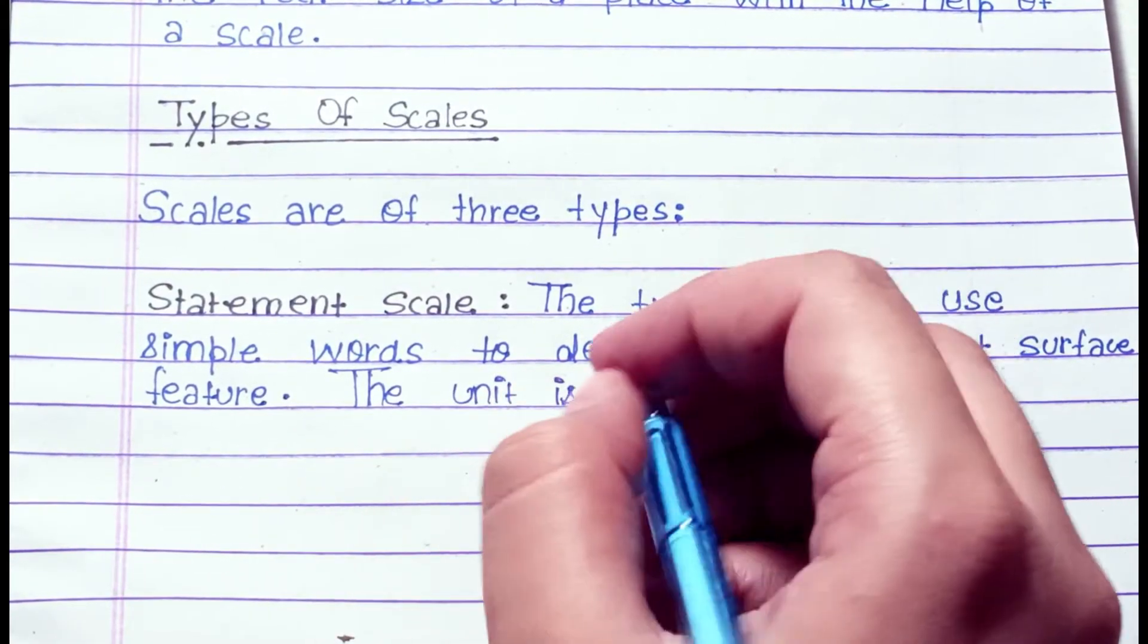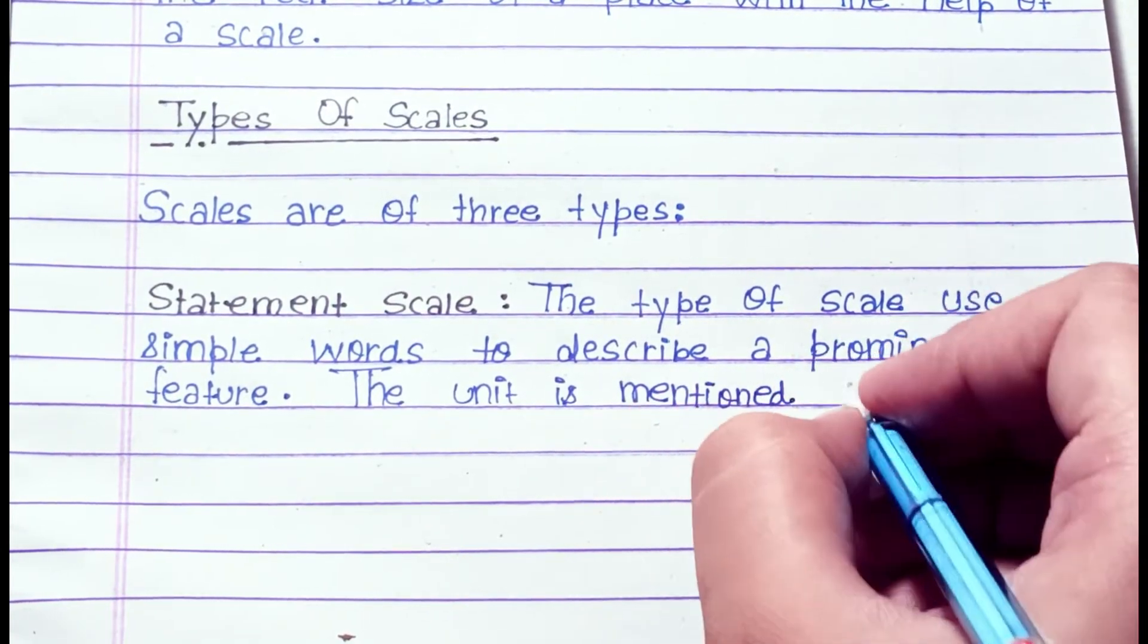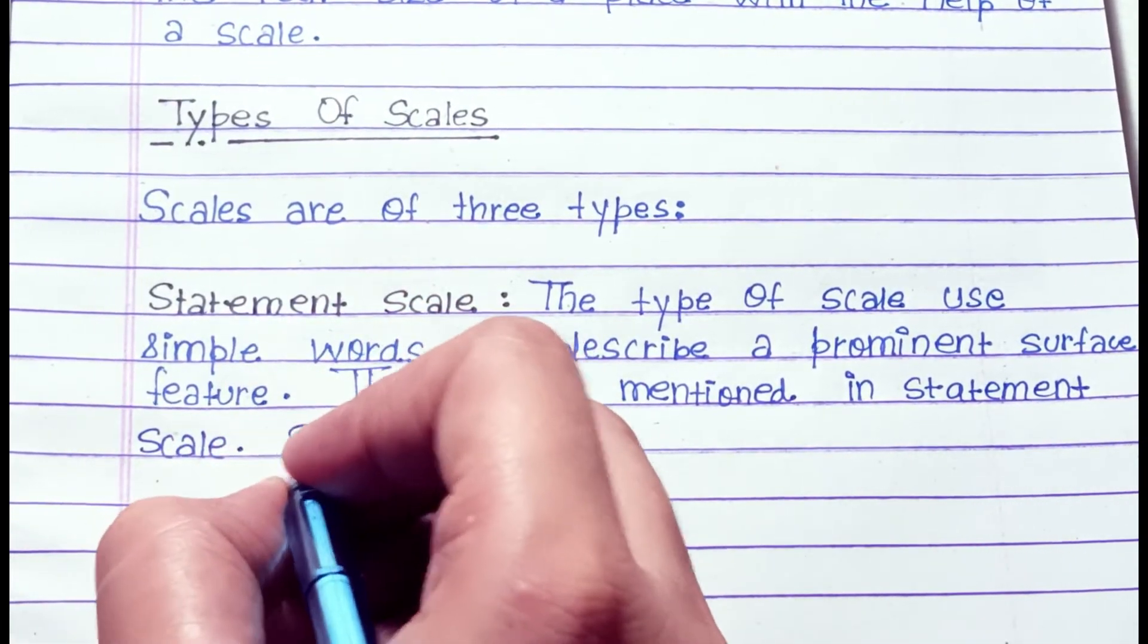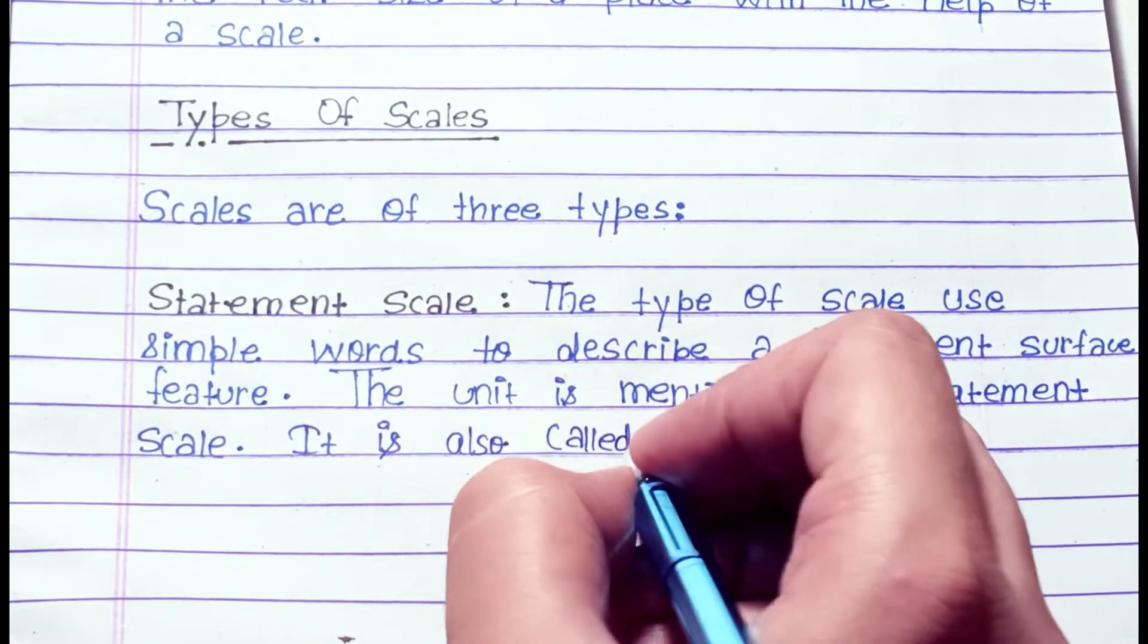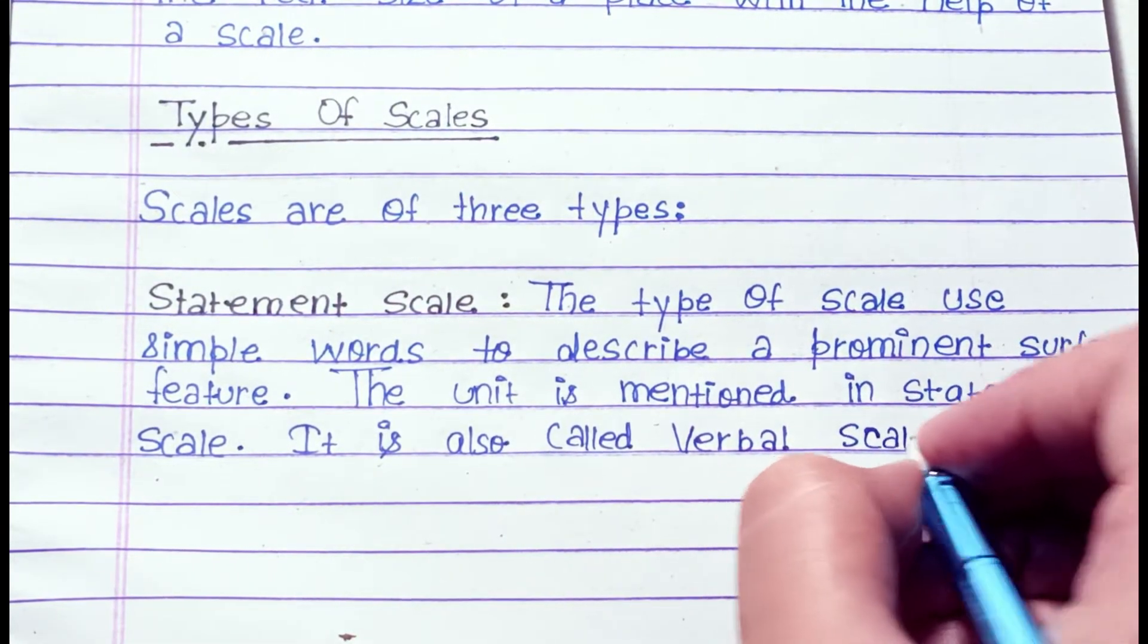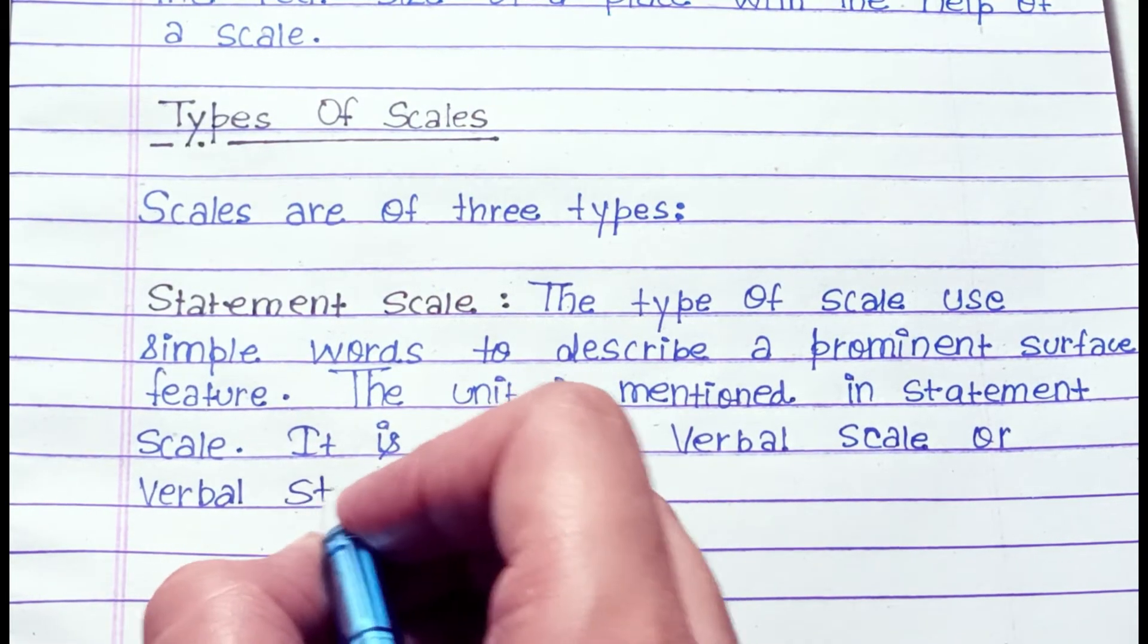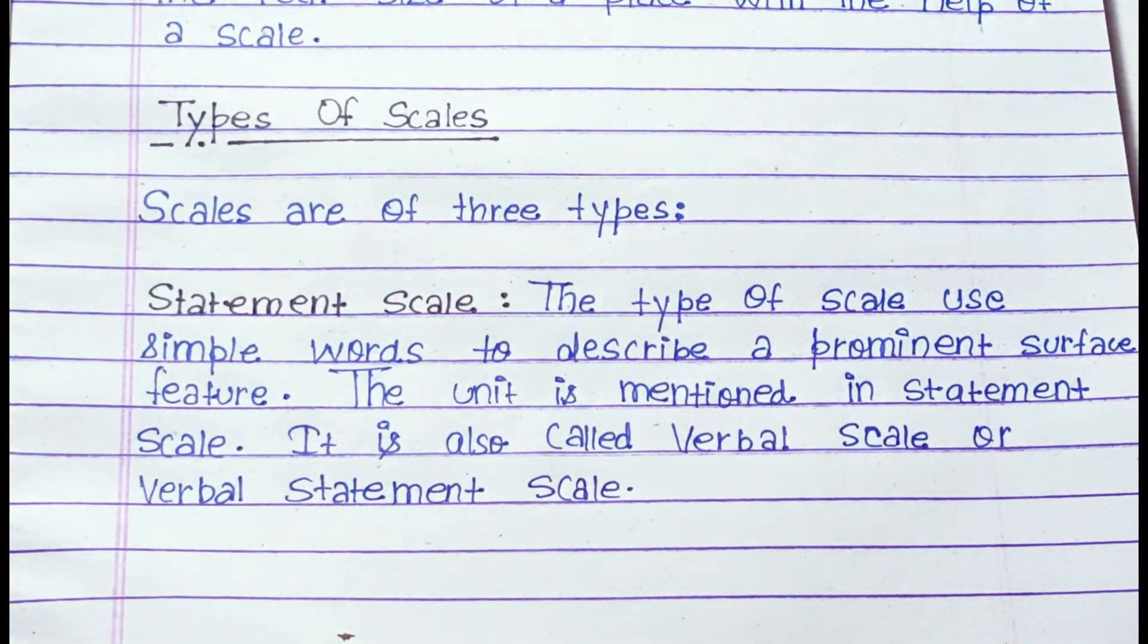Types of scale: Scales are of three types. Statement scale is the type of scale that uses simple words to describe a prominent surface feature. The unit is mentioned in statement scale. It is also called verbal scale or verbal statement scale.